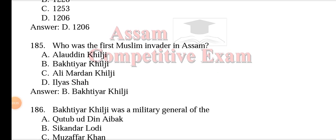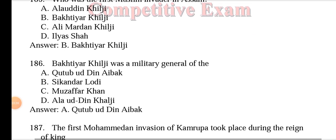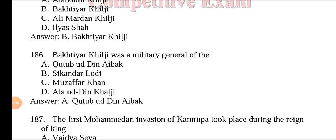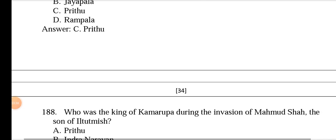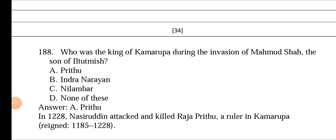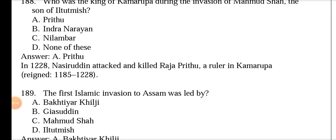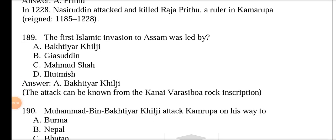The first Muslim invader in Assam was Bhaktiyar Khilji, who was a military general of Qutbuddin Aibak. The first Muhammadan invasion of Kamarupa took place during the reign of Prithu. The king of Kamarupa during the invasion of Muhammad Shah, the son of Iltutmish, was Prithu. In 1228, Nasiruddin attacked and killed Raja Prithu, a ruler of Kamarupa. Prithu's reign was from 1185 to 1228.